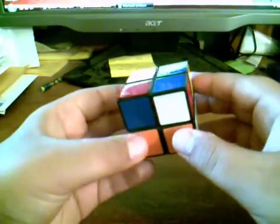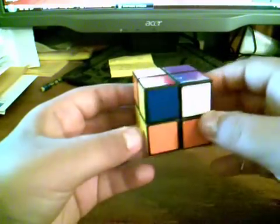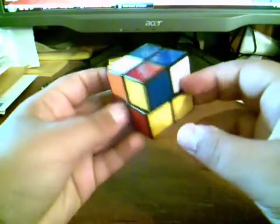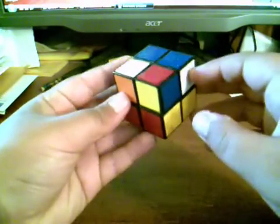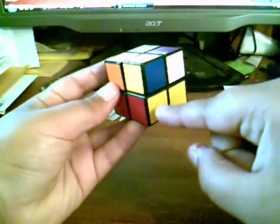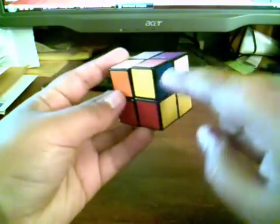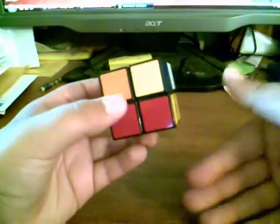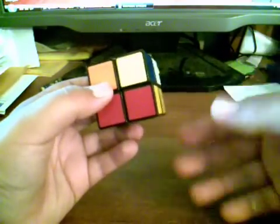So first you must orient the corners so that they're in the right spots and that all they need to do is be flipped. So for instance, this corner here would be in the correct place because yellow, yellow, red, red, and blue go on top. So that is oriented correctly because it's in the right place, it just needs to be flipped.